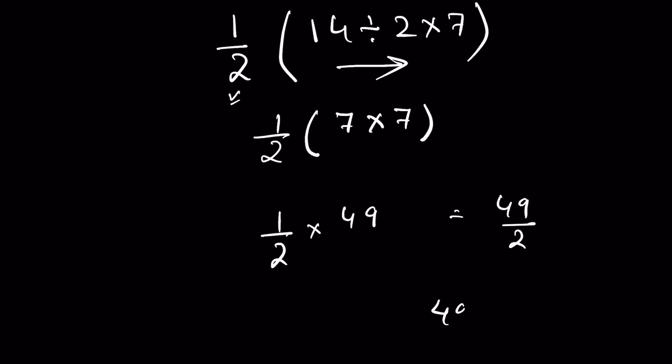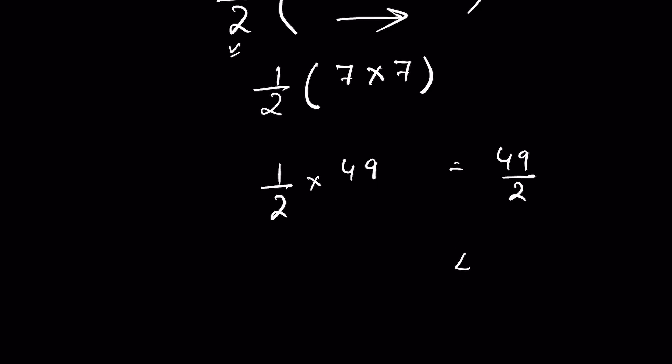Now divide 49 by 2. We divide using long division. 2 times 2 is 4, bring down the 9. 2 times 4 is 8. Subtract: 9 minus 8 is 1. So it will be 24 and 1 upon 2, not 1 upon 2.